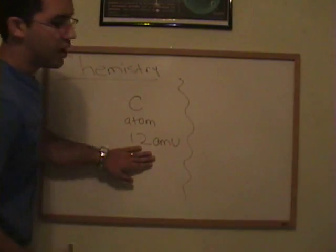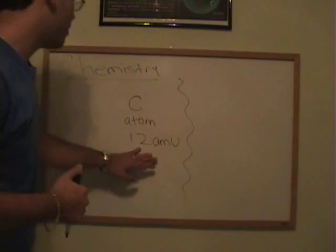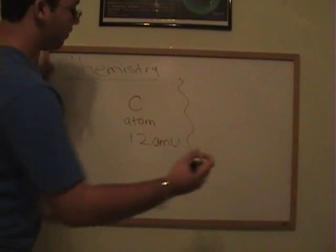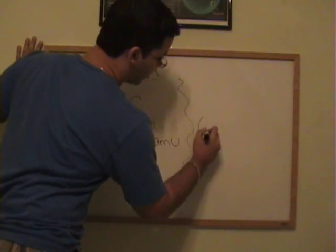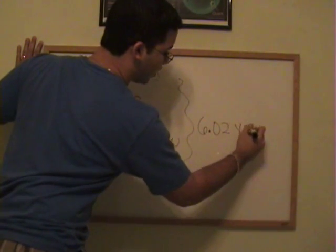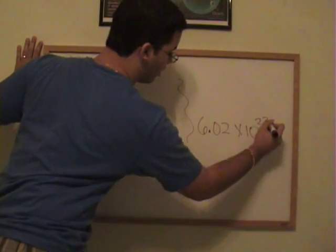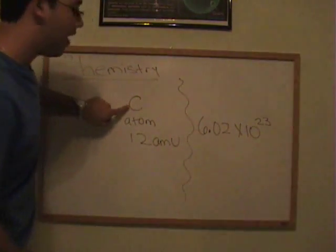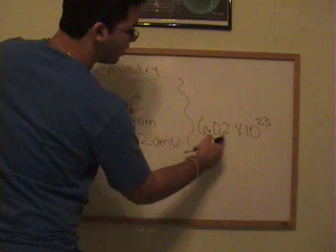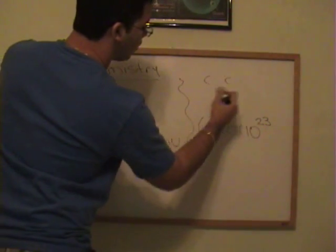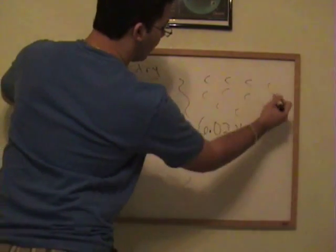Now, a scientist named Amadeus Avogadro came up with this number. It's called Avogadro's number, which is 6.02 times 10 to the 23rd. So instead of having one carbon, if you have this many, if you have 6.02 times 10 to the 23rd carbons, if you have that many carbons,